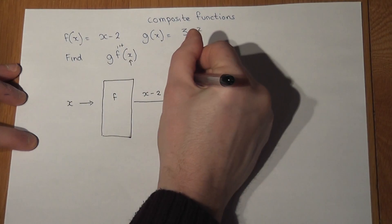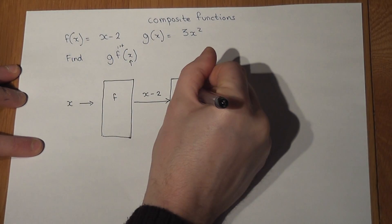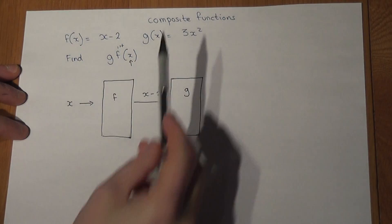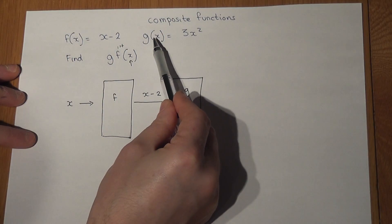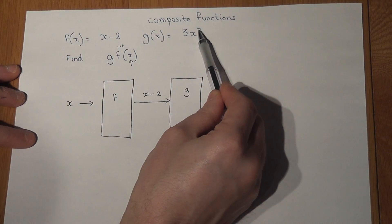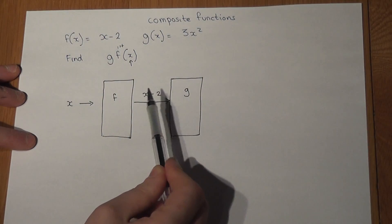function g. And the next bit is a really important bit to understand. g says whatever the input - forget about x for the moment - whatever the input is, we square the input and times that by three. Now my input is no